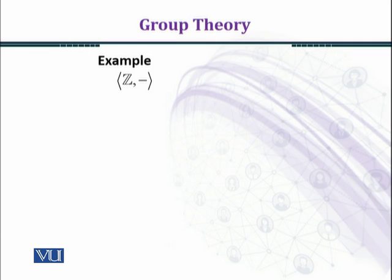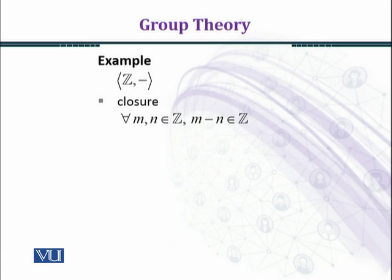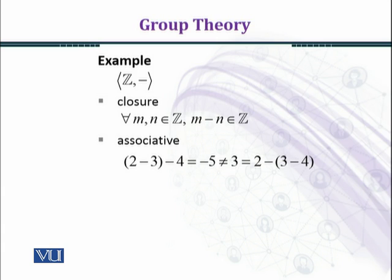Now we see whether the set of integers forms a group under the binary operation subtraction. First, we check the closure property. For every M and N in the set of integers, M minus N belongs to Z, so the closure property is satisfied. Now let's check whether the associative property holds. We choose three numbers: 2, 3, and 4, and subtract them in different orders. (2 minus 3) minus 4 equals minus 5.